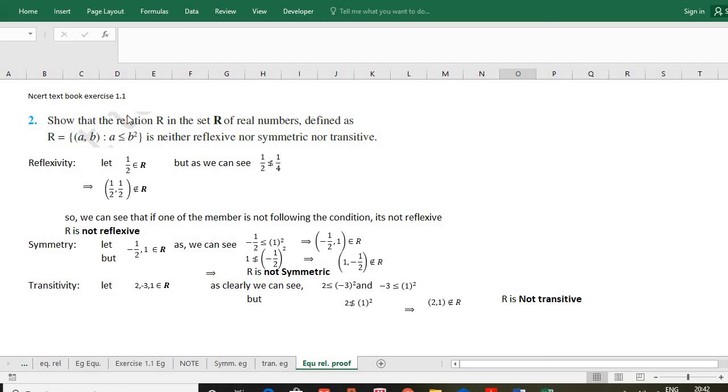It means they are connected under the given relation. Now 1 is not less than or equal to (-1/2)². As we can see, (-1/2)² equals 1/4, which is less than 1. So 1 is greater. So again we can see that 1 and -1/2 are not connected under this relation. This means it is not symmetric.